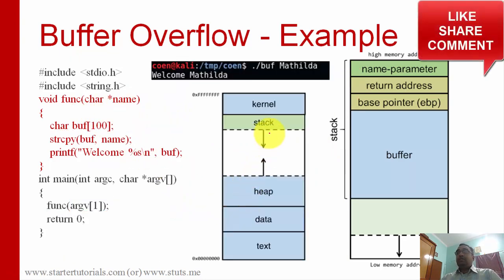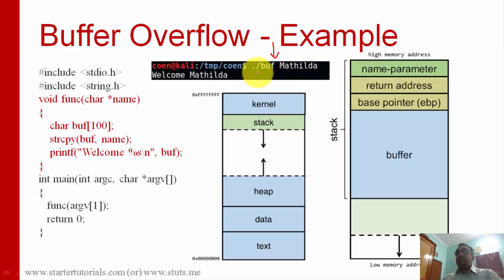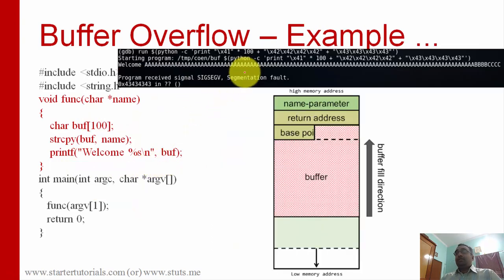Now see here, when the program is executed normally you will execute like this. I think this is Linux or Unix based system, so we will run the C programs like this: dot slash program name followed by the data. So this data goes into here, and from here it goes into name and from name it is stored into buffer array. The output is welcome Matilda.